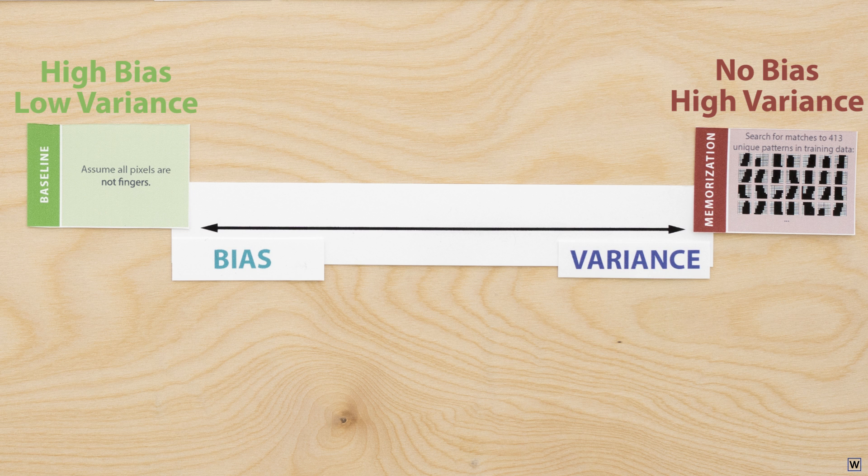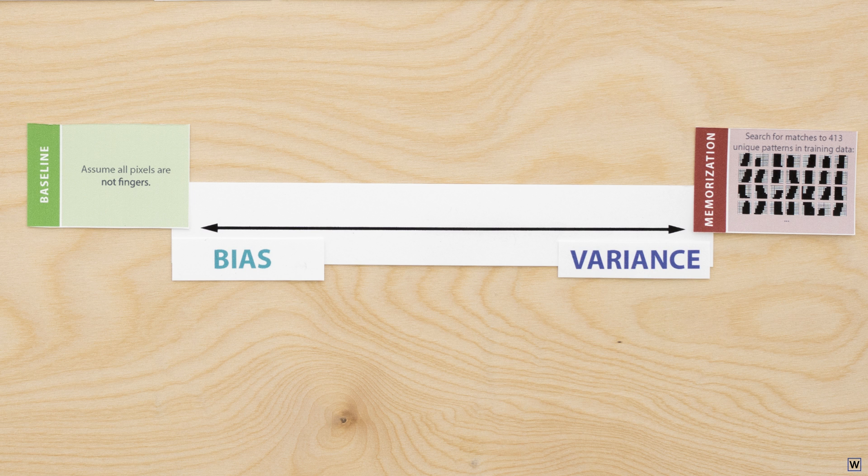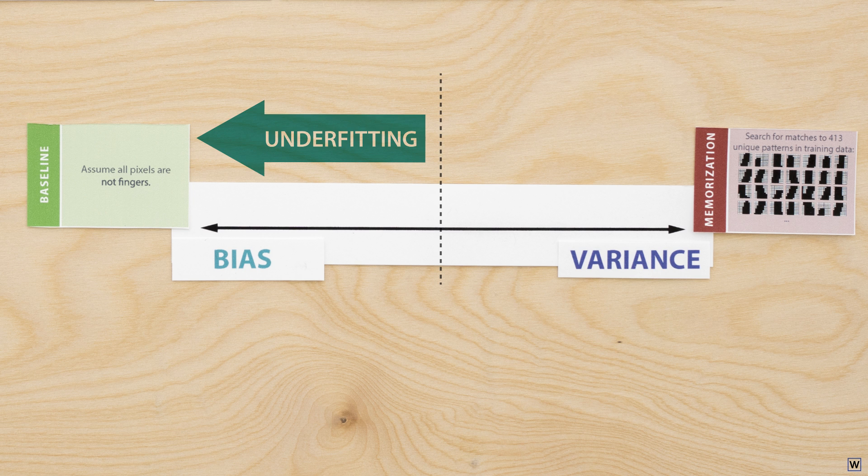When building machine learning algorithms, it's critical that we pay attention to this trade-off between bias and variance. Choosing where to live on this spectrum is key if we're really going to learn from data. If our solution is too biased, we risk underfitting, finding too simple a solution that doesn't actually fit the underlying patterns we're looking for.